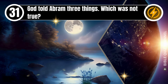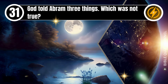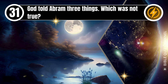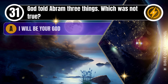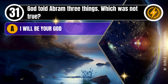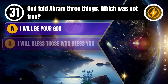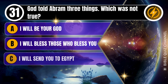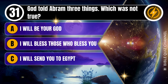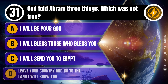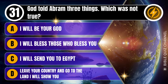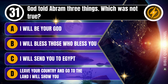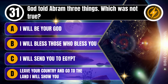Question 31. God told Abraham three things. Which was not true? A. I will be your God. B. I will bless those who bless you. C. I will send you to Egypt. D. Leave your country and go to the land I will show you. You get 10 seconds.